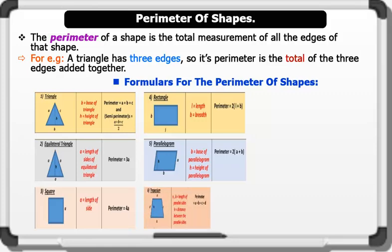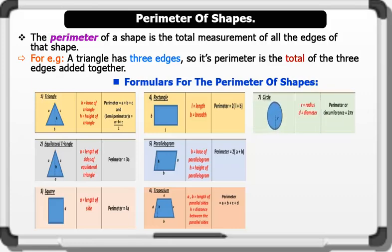The perimeter of a trapezium equals a plus b plus c plus d. The perimeter of a circle equals two pi r. The perimeter of a rhombus equals a times a times a times a, which equals 4a.